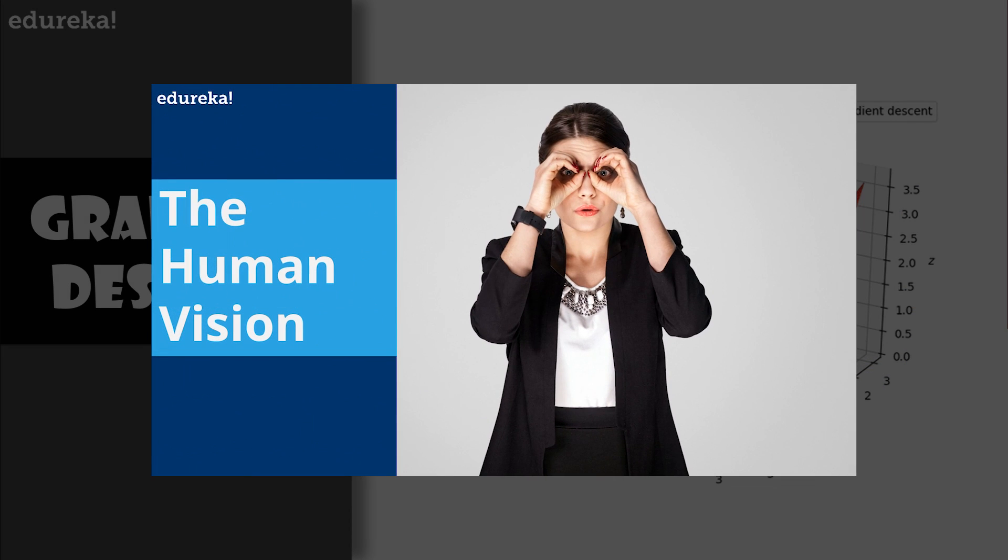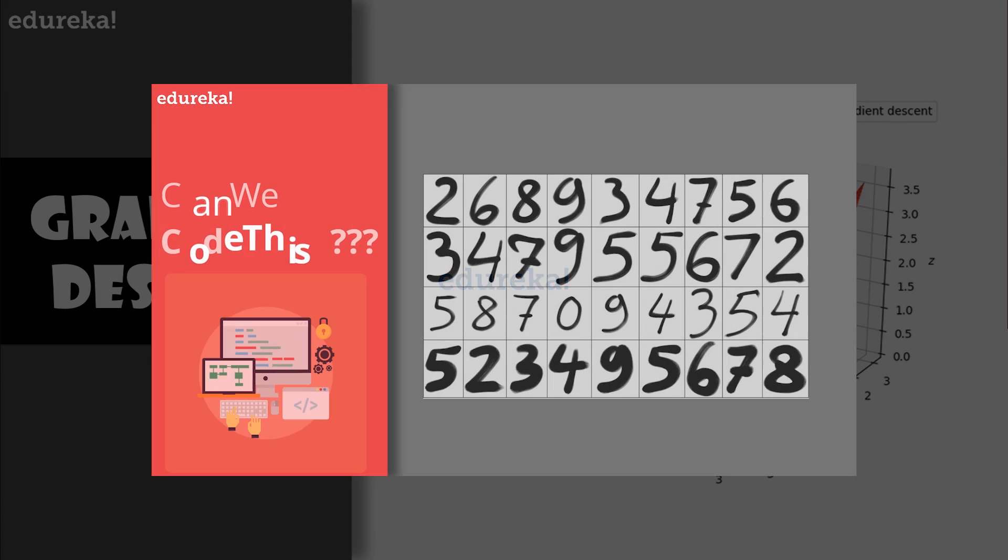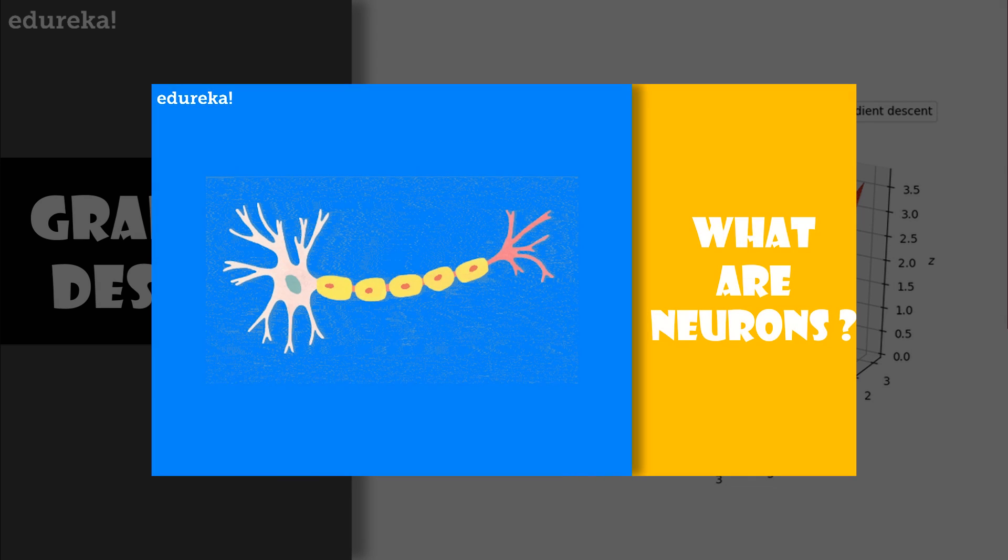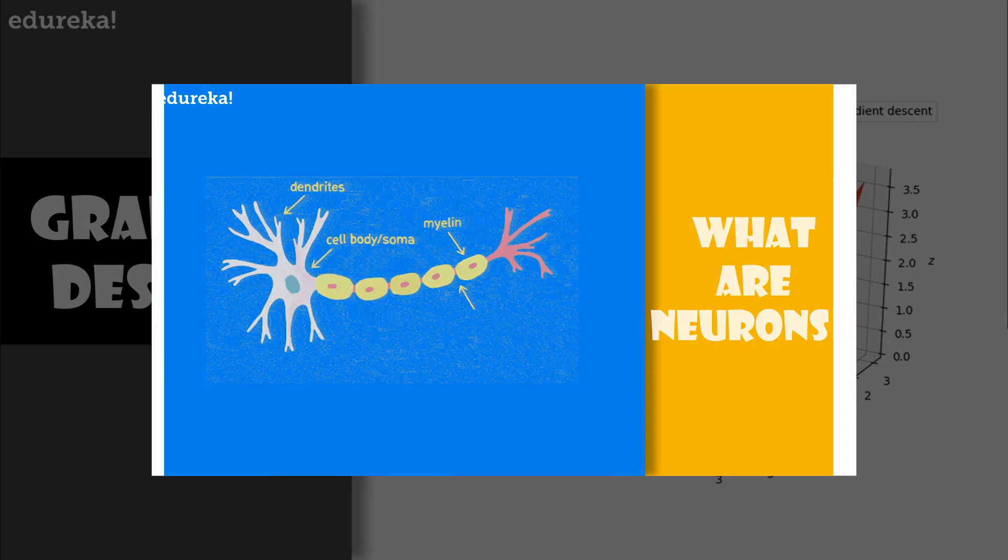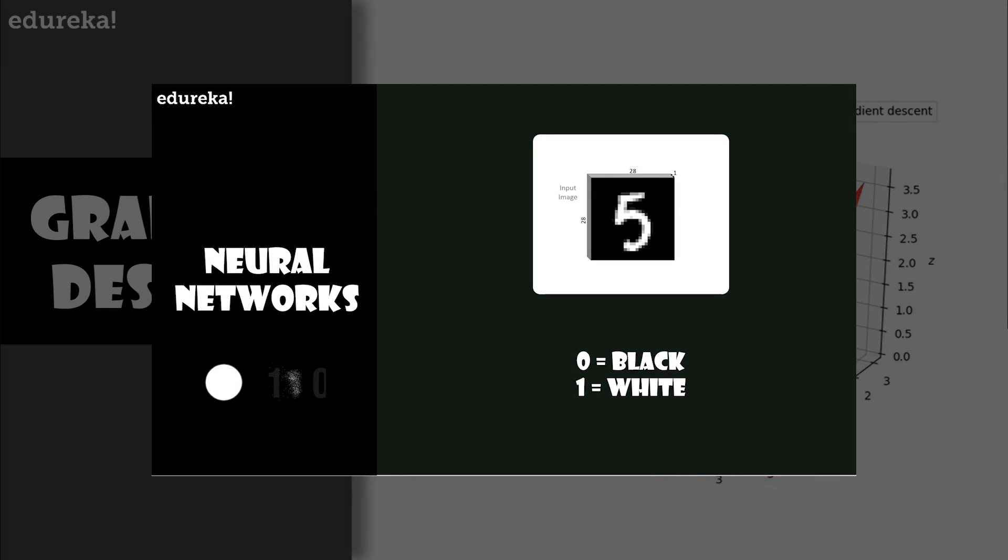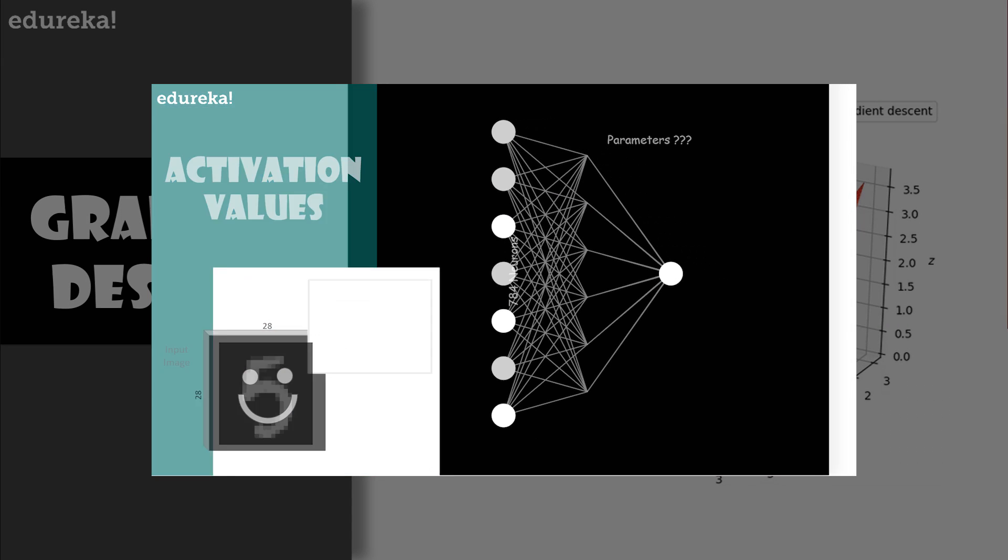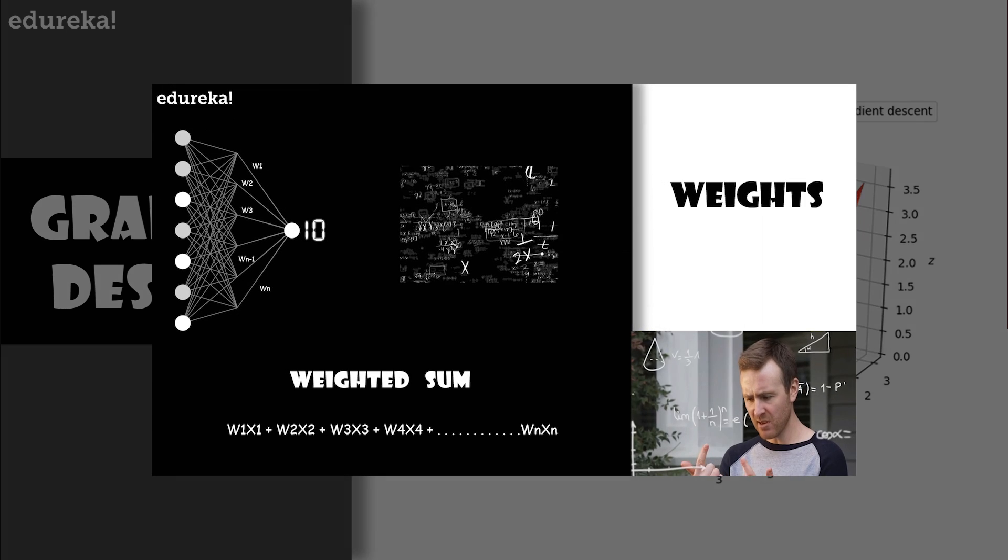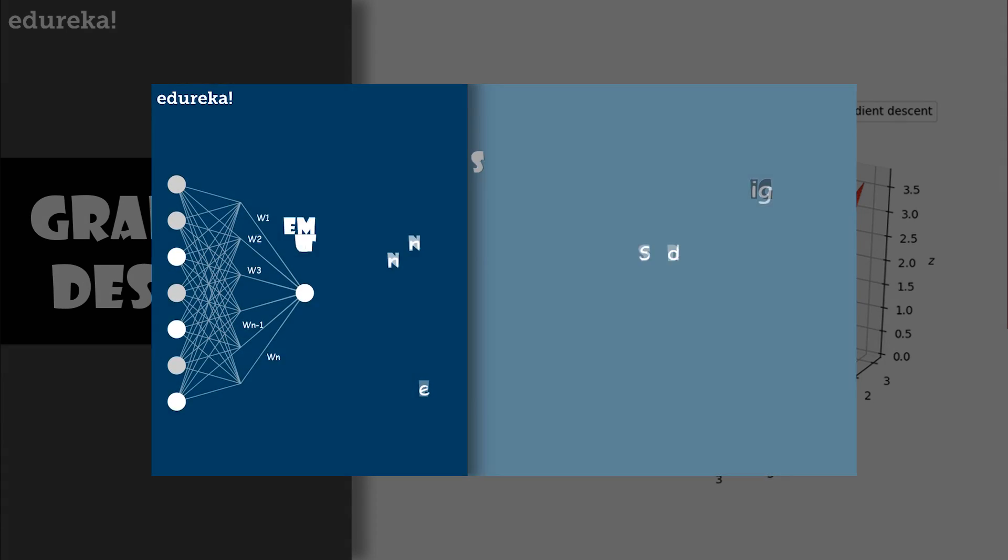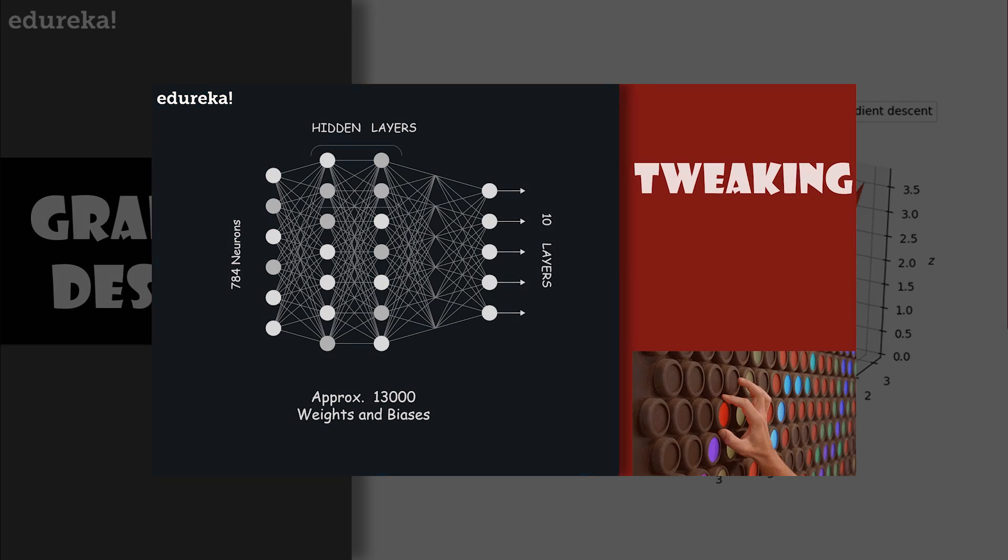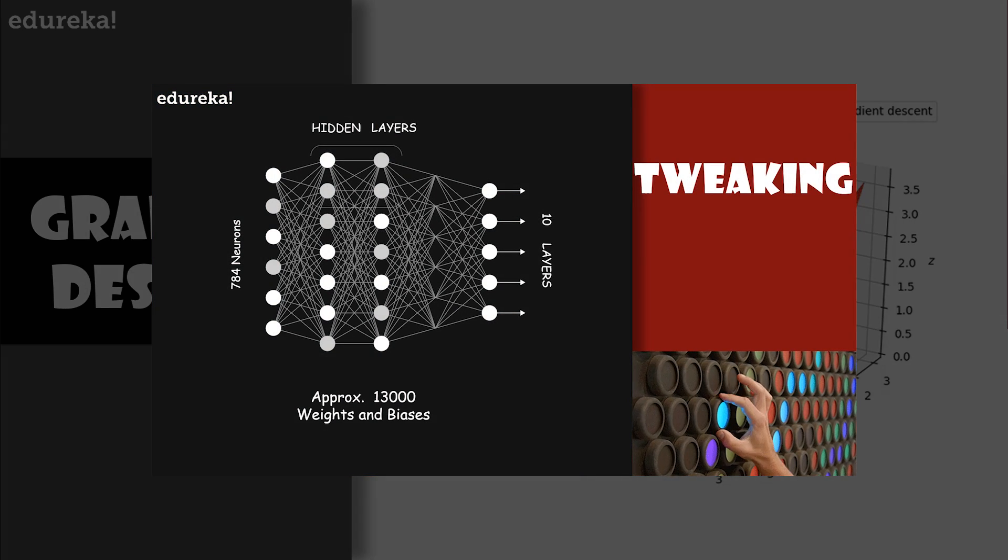Just to remind you, our goal here is the recognition of handwritten digits rendered on a 28 by 28 pixel grid. Each pixel has some grayscale value between 0 and 1, which determines the activations of the 784 neurons in the input layer. The activation for each neuron in the following layers is based on a weighted sum of the activations in the previous layer plus some special number called the bias. Then you compute that sum with some other function like the sigmoid or ReLU function.